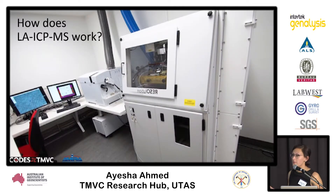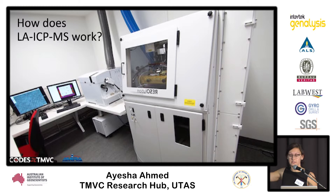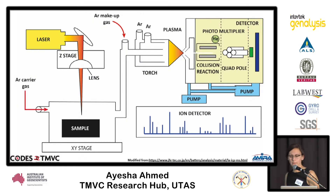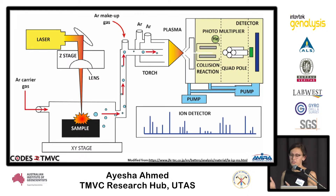For those not familiar with what an LA-ICP-MS setup looks like, here is one from CODES. It can be divided into two components: a laser that sits over the sample mount, and a set of tubing connecting it to the mass spectrometer. The laser is directed at the sample, creating aerosol particles that are carried through to the plasma for ionization and then into the mass spectrometer for analysis.